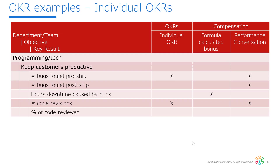Here's an example OKR. For a programming department, I might have an objective of 'keep customers productive' — remember, OKRs should talk about this in terms of customer benefit. If I've got bugs and the system's down, customers aren't productive. So I could have a metric like number of bugs found pre-ship — that's an individual OKR used as part of the performance conversation. I might also have bugs found post-ship, hours downtime caused by bugs as part of the formula — instead of EBITDA, I could use hours downtime in that mathematical calculation — and code revisions as well.